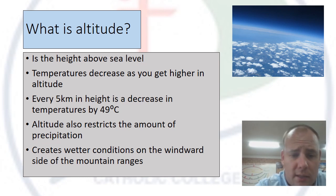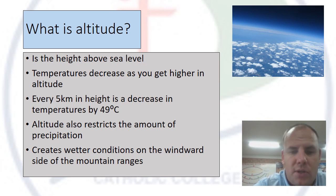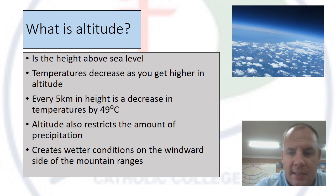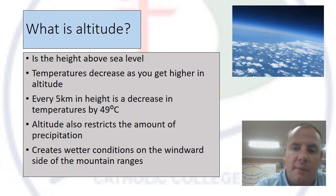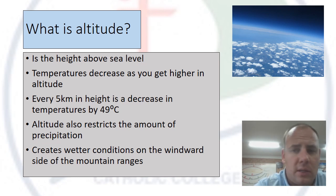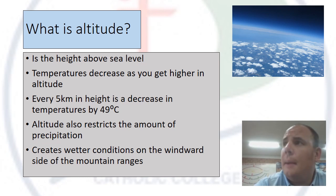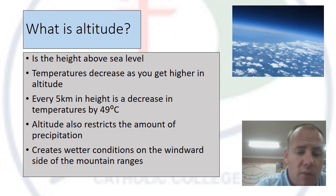Altitude also restricts the amount of precipitation. As air gets pushed up, it heats and condenses to form rain, which is why mountains can be considerably wet — and if cold enough, snowy. Looking at Australia's central coast, as you go from the beach up the Great Dividing Range it gets wetter, but on the other side of the range it gets dry. So altitude not only makes temperatures colder, it also dries the moisture out of the air.